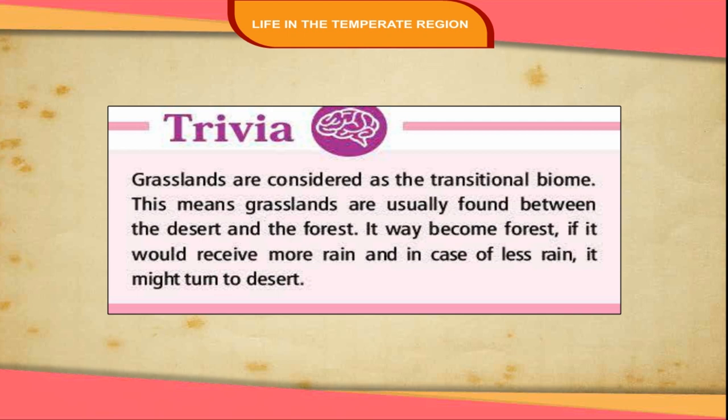Trivia: Grasslands are considered a transitional biome. This means grasslands are usually found between the desert and the forest. They may become forest if they receive more rain, and in case of less rain, they might turn to desert.